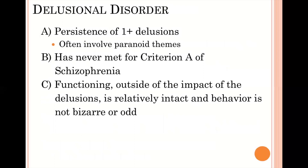Delusional disorder is a condition where individuals have persistent delusional beliefs, but those beliefs are not what we call bizarre. Bizarre beliefs were ones where the person believed something that defies the laws of physics. In delusional disorder, the beliefs are non-bizarre — they are things that could actually happen in real life, such as being followed or someone being in love with you. They often have paranoid themes, have never met criterion A of schizophrenia, and outside of their delusion, their functioning is typically perfectly fine.